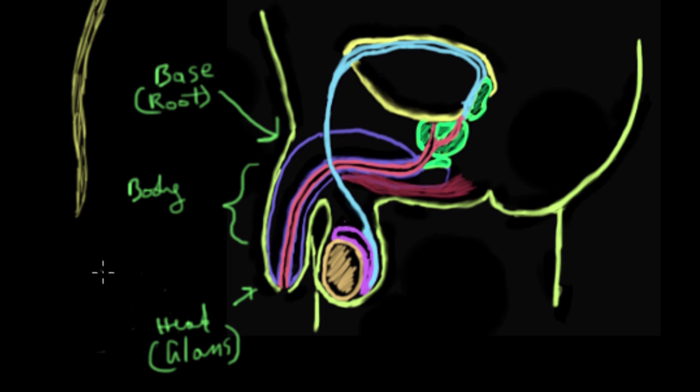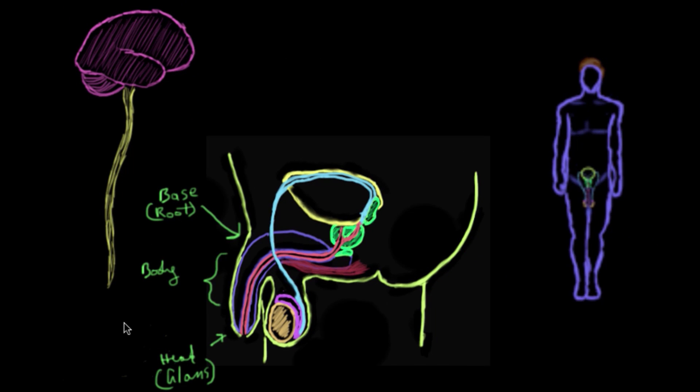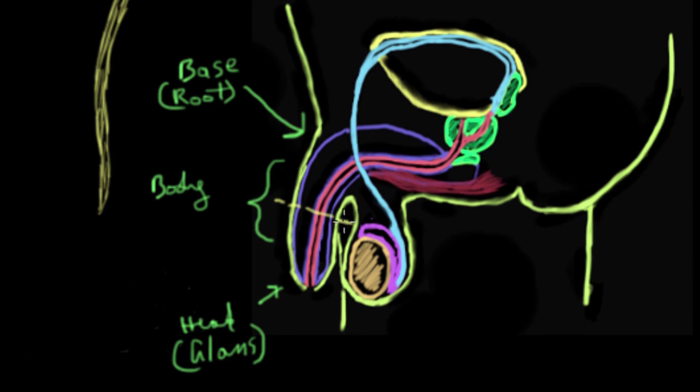And this area here is called the head or the glans. What we'll do next is look at a more detailed view of the anatomy of the inside of the penis. The best way to visualize that is if we did something called a transverse view. Transverse view is basically a cut that goes this way across the penis. We'll put our little eye here and we'll look up at this cut surface here.